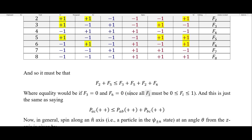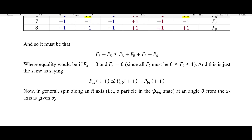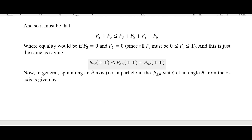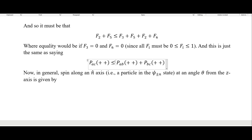That's because all of our frequencies here have to be between zero and one inclusive. And this is the same as saying the probability of A and C both being positive — F2 plus F5 — is less than or equal to AB both positive plus BC both positive.